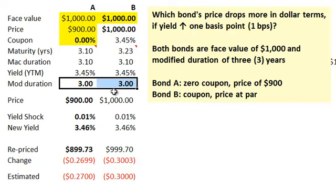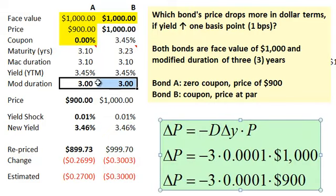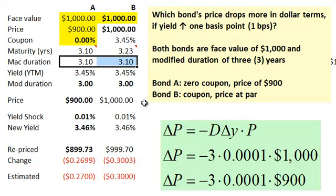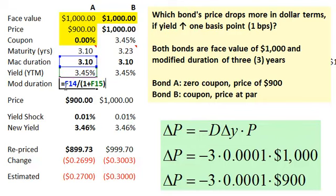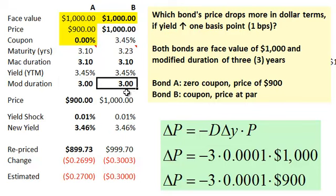Let's notice that the modified duration is related to the Macaulay duration. The Macaulay duration under annual compounding here for both bonds needs to be 3.1 years. Macaulay duration needs to exceed modified duration under any scenario of discrete compounding. Only under continuous compounding are they the same. I needed to solve for the yield of 3.45 percent. If we take the Macaulay duration of 3.1 and divide by one plus the yield, we get the modified duration. See that formula there? Given Mac duration of 3.1 and yield of 3.45, we justify the modified duration of three years for both bonds.